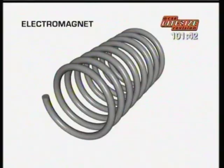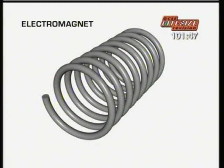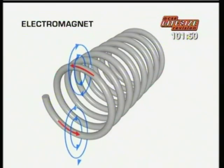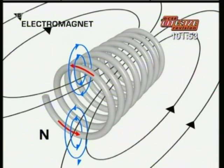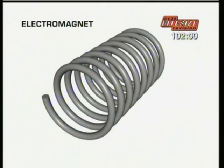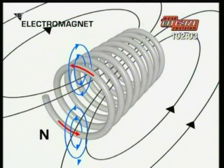This electromagnetic effect can be put to good use to make an electromagnet. If the wire is made into a coil, the current flowing through it creates a magnetic field that is the same as around a bar magnet — it's an electric magnet. When the current is switched off, the magnetic field disappears. A coiled wire like this is called a solenoid.